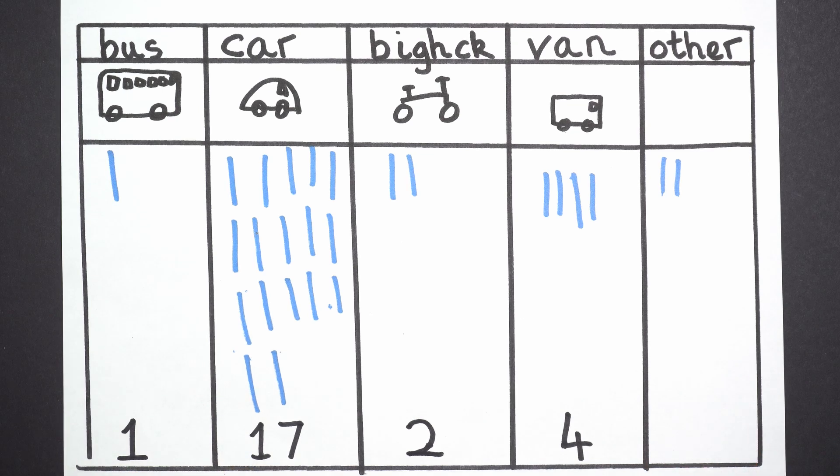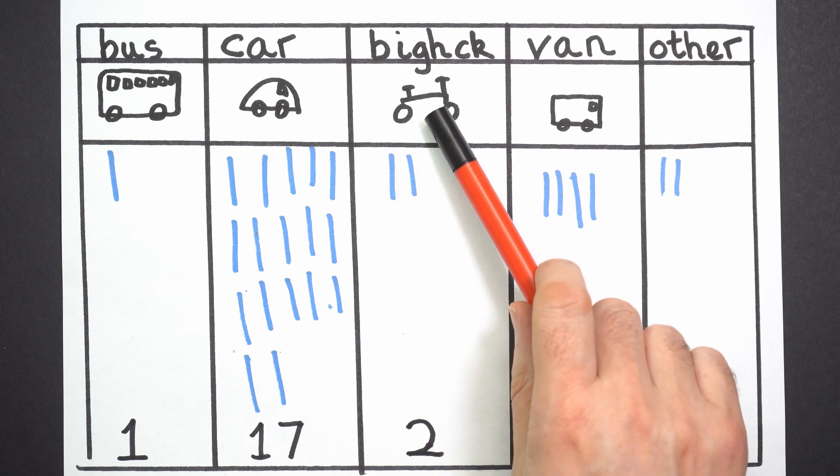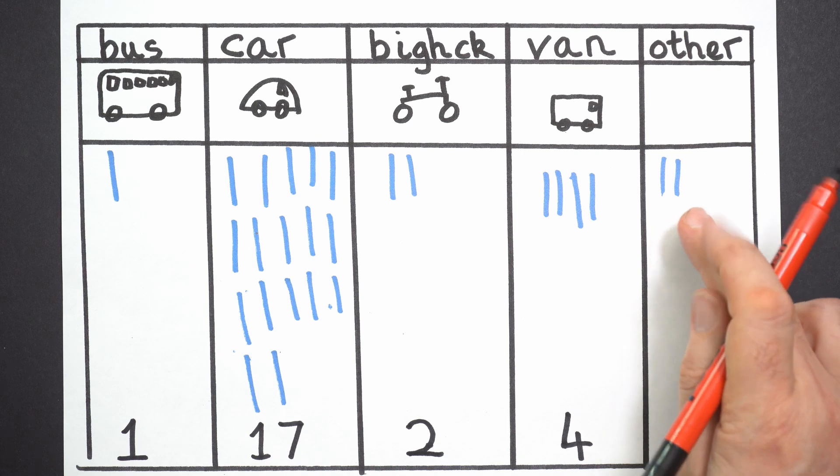And how many things were there? How many vehicles which were not buses, not cars, not bikes, not vans? So something else. Other. Two.